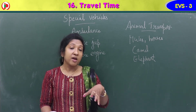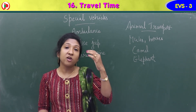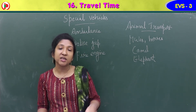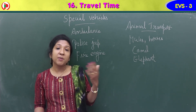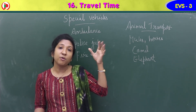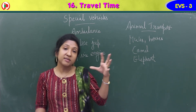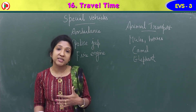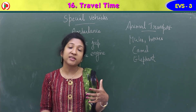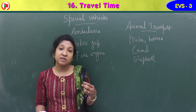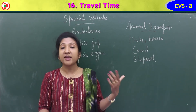Scientists are trying to invent vehicles that run on roads using solar energy or electricity to reduce air pollution. As the number of vehicles and people increases, air pollution also increases, which is harmful to us. Solar energy is already used in solar cookers and street lights, and scientists are trying to use it for vehicles too.